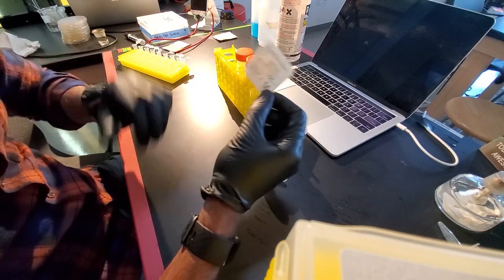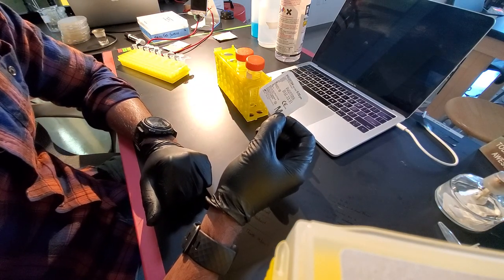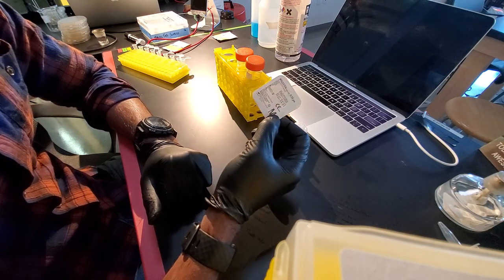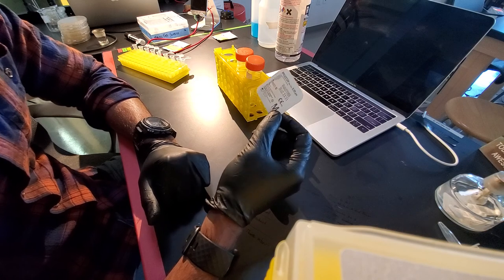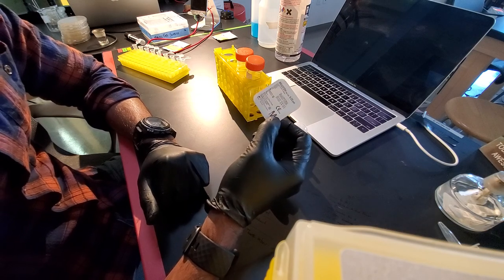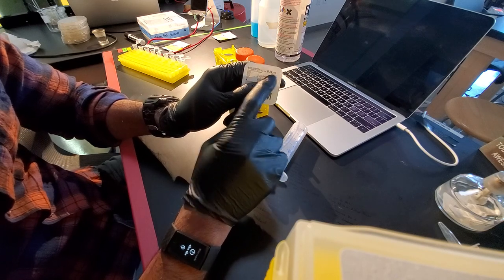And then the selection of the filter is probably the most important part of this whole thing. And what you're going to want to make sure is that you need to know what you're trying to filter out. So in this situation, I'm trying to filter out bacteria, which is generally around one micron. So I'm using a 0.22 micron filter. So you can see 0.22 micrometer filter.